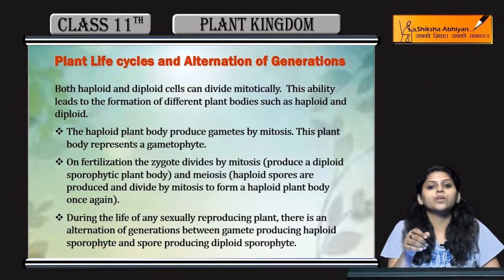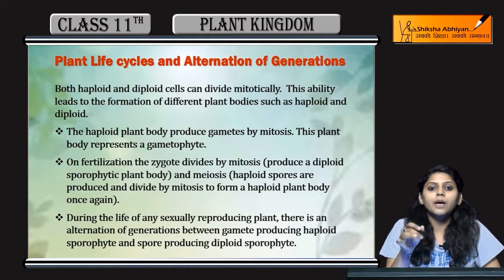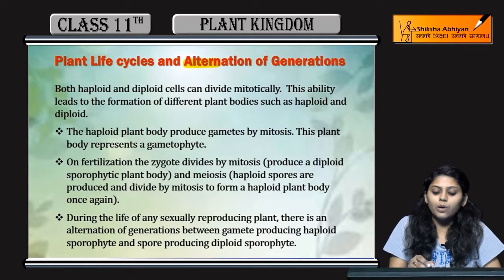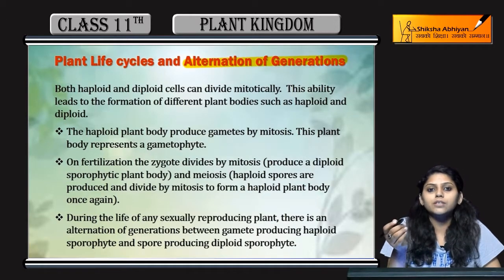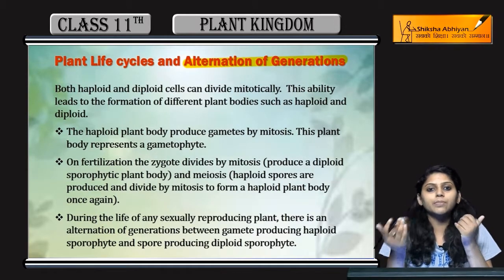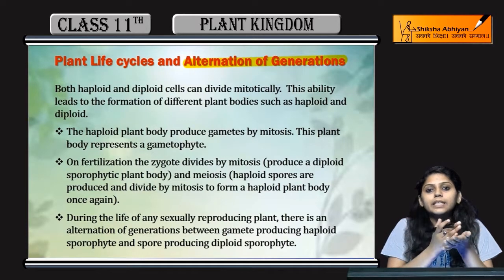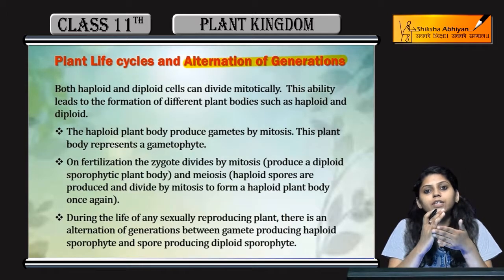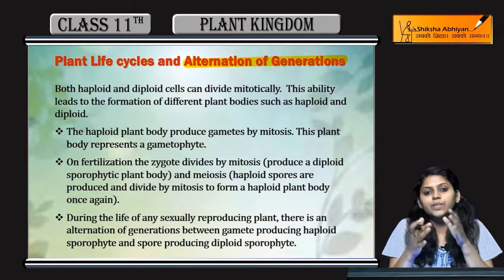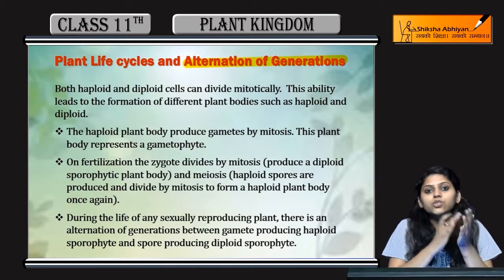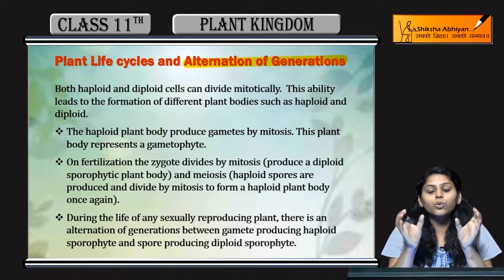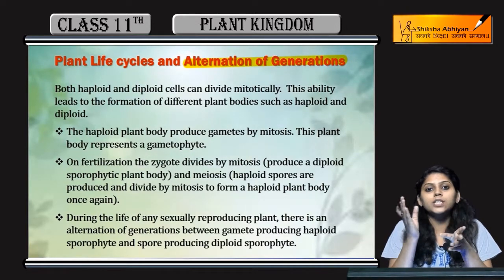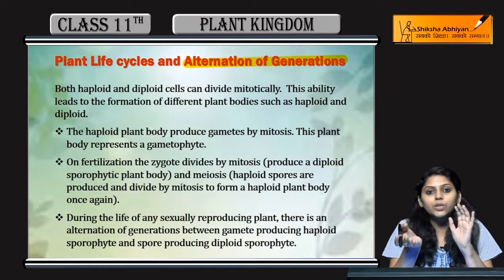Now the very last topic of this chapter: Plant Life Cycles and Alteration of Generation. Alteration of Generation से आप क्या समझते हो — हमने देखा कि किसी भी plant में sporophytic stage थी या फिर diploid stage present थी, gametophytic haploid stage और diploid stage — दो stages present हैं। तो इन stages का एक दूसरे में convert होना इसे alteration of generation कहते हैं।